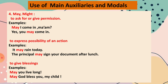May and might both show the degree of possibility of something happening. May is used when it is likely that something will take place. Might is used when there is only a possibility of something taking place. So when you feel the action will surely happen, we use may; when we are not that sure and there is only a possibility, we use might. For example: The class teacher may come tomorrow. The class teacher might come tomorrow.